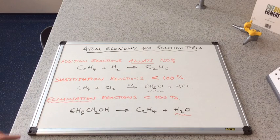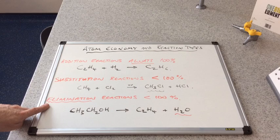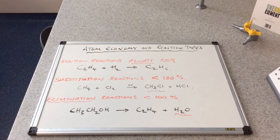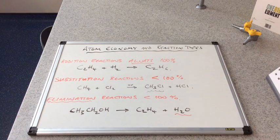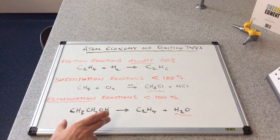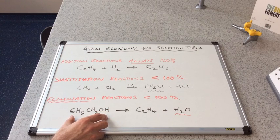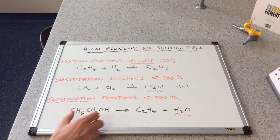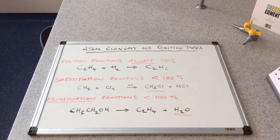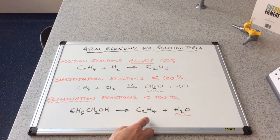So the atom economy is less than 100%. And the final type of reaction we're looking at here are elimination reactions. Now they also have an atom economy which would be less than 100%. And so the example I've chosen is the elimination of water from ethanol, so we refer to that as the dehydration of ethanol.